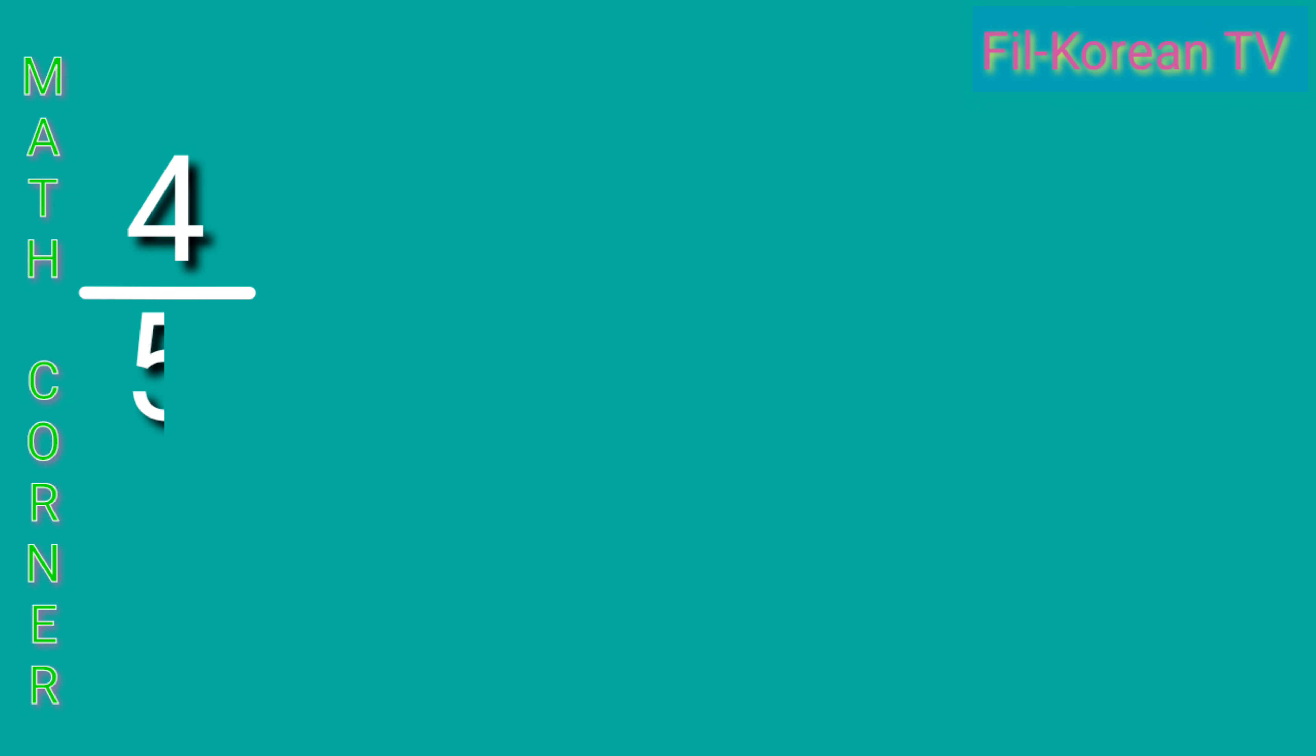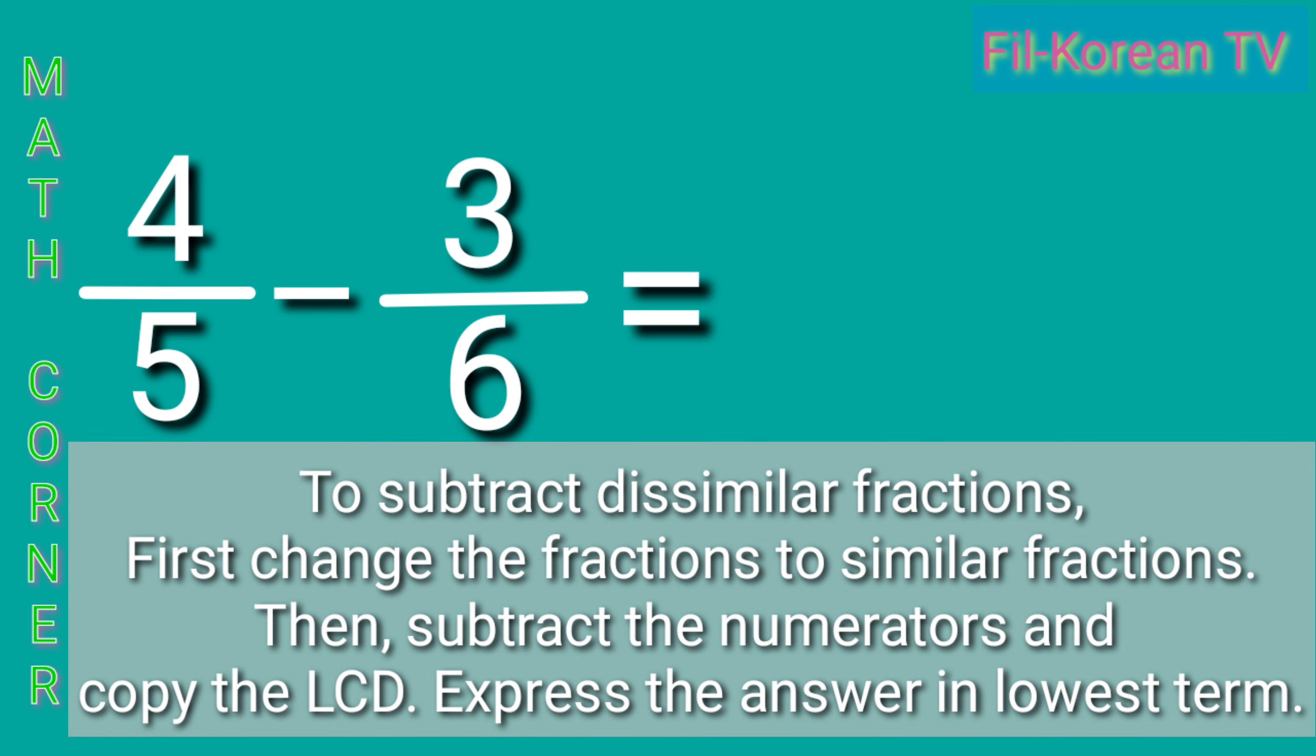Let's start with this example. 4 fifths minus 3 sixths equals. To subtract dissimilar fractions, first change the fractions to similar fractions. Then, subtract the numerators and copy the LCD. Express the answer in lowest term.